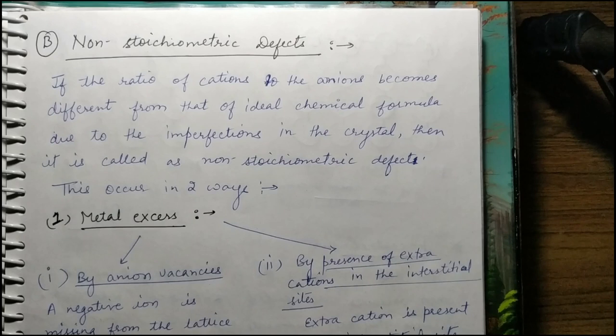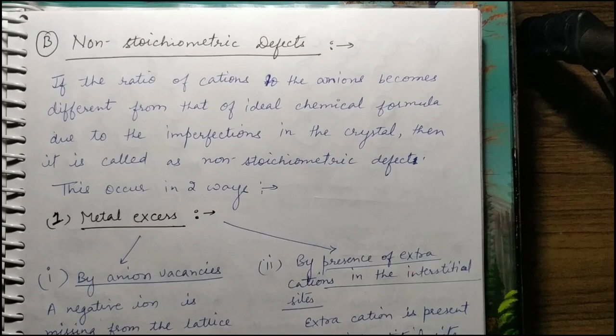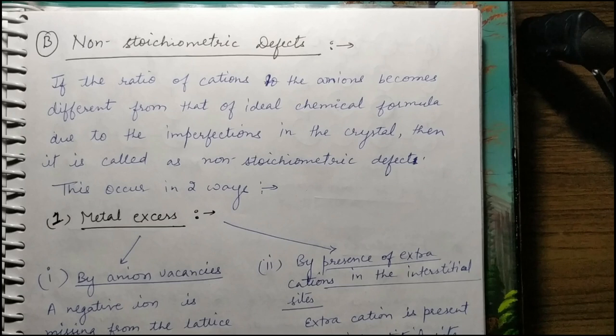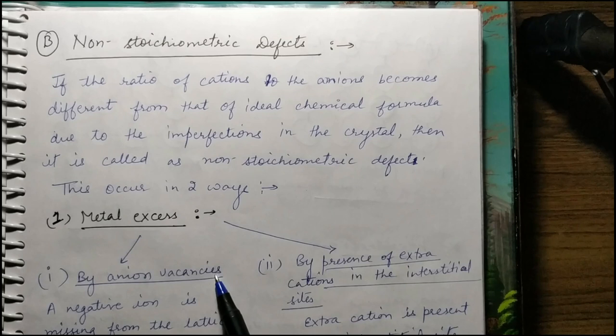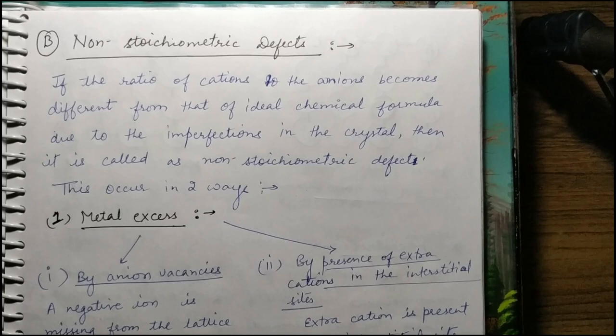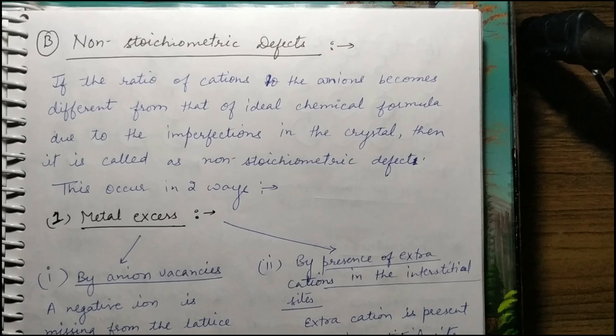Then non-stoichiometric defects — here the ratio of cations to anions differs from the ideal chemical formula; stoichiometry is not maintained. This occurs in two ways: metal excess or metal deficiency. Metal excess can happen by creating anion vacancies (so cations are in excess), or by adding extra cations in interstitial sites. The anion vacancy case is similar to Schottky defect and appears in crystals where Schottky defect is present. In both cases of metal excess, electrical neutrality is maintained but stoichiometry is not, and such crystals behave like semiconductors.